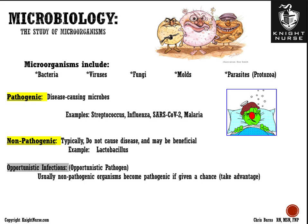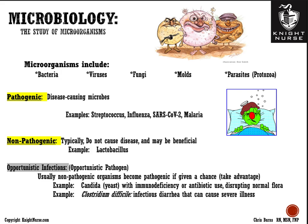There's a gray area of opportunistic infections. Opportunistic pathogens are usually non-pathogenic organisms often found on us that become pathogenic if given a chance. Examples include candida yeast, where immunodeficiency or frequent antibiotic use can disrupt normal flora and cause overwhelming infection, and clostridium difficile, which causes infectious diarrhea that can become quite severe, especially in those at risk for dehydration.